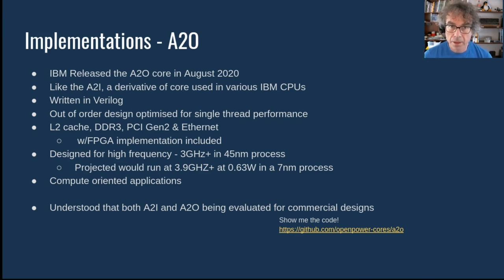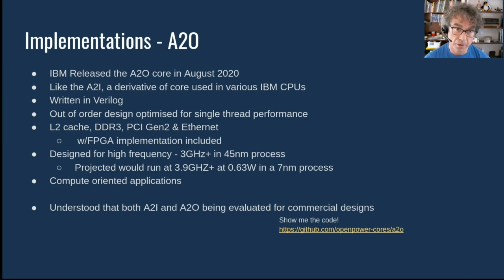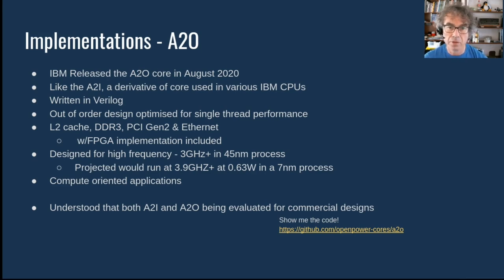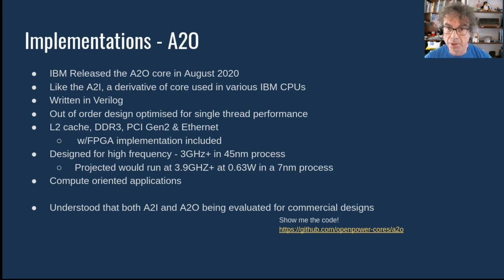A2O was released a little later — from the same lineage, a derivative of a core used in IBM CPUs — also written in Verilog. But it's an out-of-order design optimized for single-thread performance. It can be configured as one or two cores, with similar peripherals and frequencies — though it can run a little faster at higher power consumption, with rather more compute. It's very much intended for compute-oriented applications. My understanding is that both A2i and A2O are being evaluated for commercial designs by a number of companies around the world.